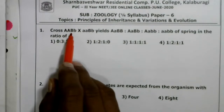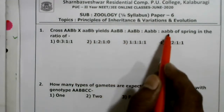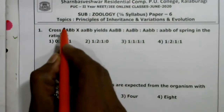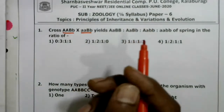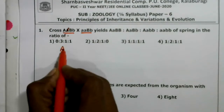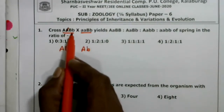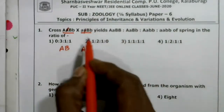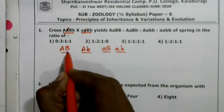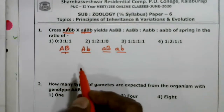The cross between capital A capital B and small b with small a small a capital B small b yields four kinds of offspring. We should go for crossing. From these two parents we produce gametes. These are homozygous — instead of two alleles we take one. The gametes produced are capital A capital B and capital A small b from the first parent, and small a capital B and small a small b from the second parent.